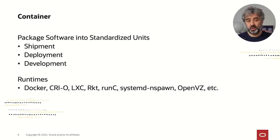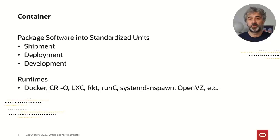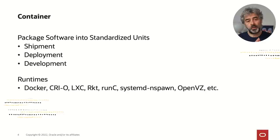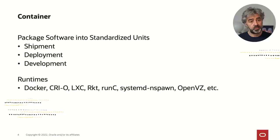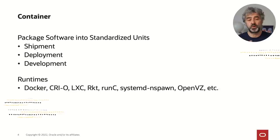A container includes the application, its dependencies, probably some configuration files, and potentially other bits and pieces needed to run that application. What you have at the end of the day is one single unit that you can easily deploy and move around. Under the hood, containers are made possible thanks to key Linux technologies such as namespaces, cgroups, and LSM — Linux security modules. Namespaces control who the container can talk to, cgroups govern the amount of resources it can consume, and LSM handles security — what the container is allowed to do.